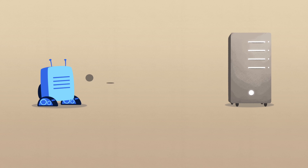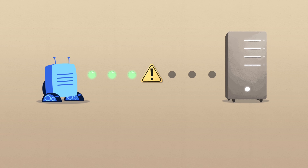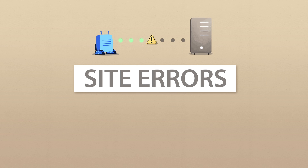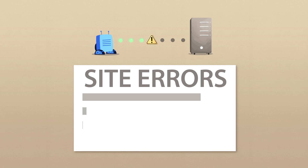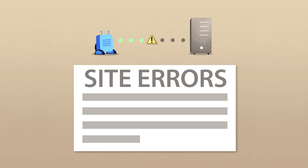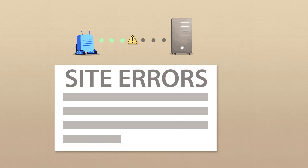When Google isn't able to get through to your site's server in a way that would allow us to crawl your site's content, we'll also note that under your site errors. These are often critical issues that need to be resolved as soon as possible.